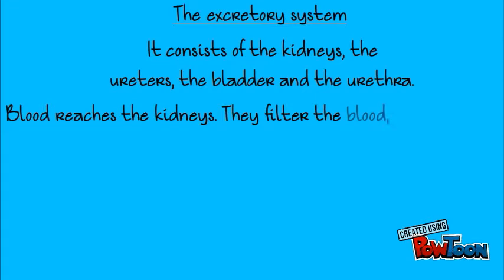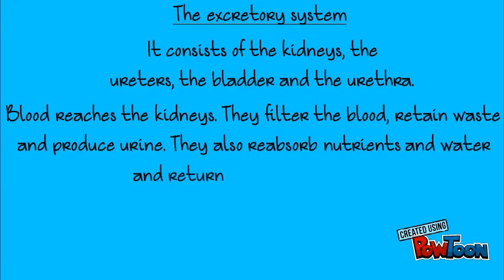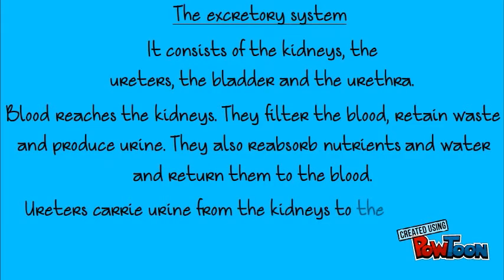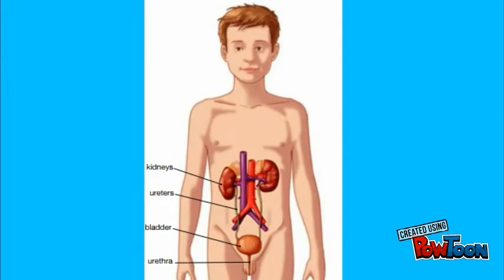Blood reaches the kidneys. Kidneys filter the blood, retain waste, and produce urine. They also reabsorb nutrients and water and return them to the blood. Ureters carry urine from the kidneys to the bladder. Urine leaves the body through the urethra. Here you are the excretory system, where you can see the kidneys, ureters, bladder, and urethra.